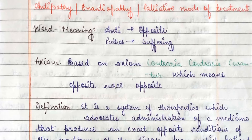Antipathy, enantiopathy, or palliative mode of treatment. The term antipathy itself tells us: 'anti' means opposite and 'pathy' means suffering. So if any suffering is treated by its opposite, we call it antipathy mode of treatment. For example, heat treated by cold is an antipathy mode of treatment. This is based on the axiom 'contraria contraris curanter', which means opposite cures opposite — just like homeopathy is based on 'similia similibus curanter'.